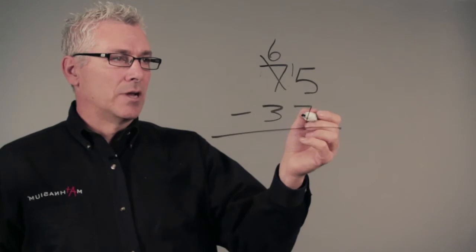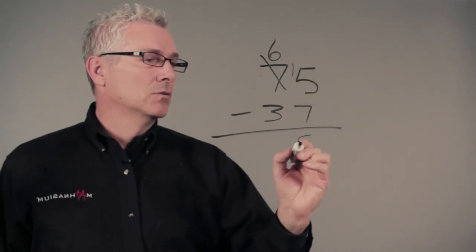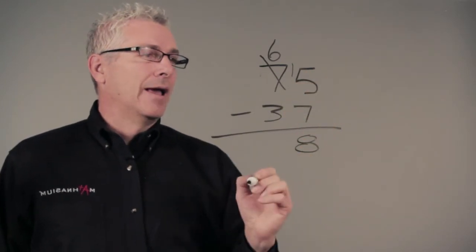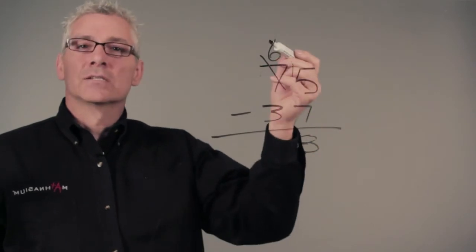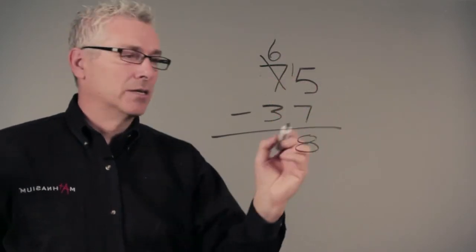Now we're easily able to subtract seven from 15, which is eight. And that leaves us to subtract three from six. Six minus three is, that's right, it's three.